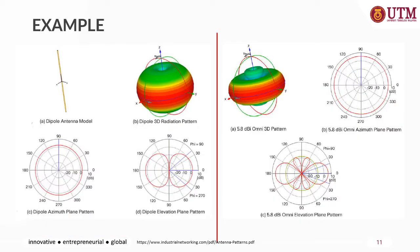Let's look at the example of the radiation pattern for the dipole antenna. For the 3D radiation pattern, it looks like a donut shape. For the azimuth plane — the H-plane — when we cut it here and look from the top, we may see a round shape, represented in the H-plane.